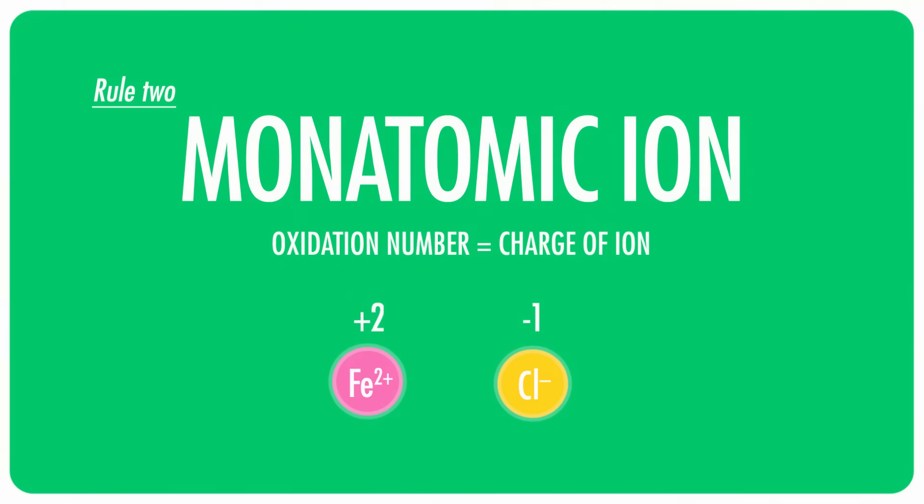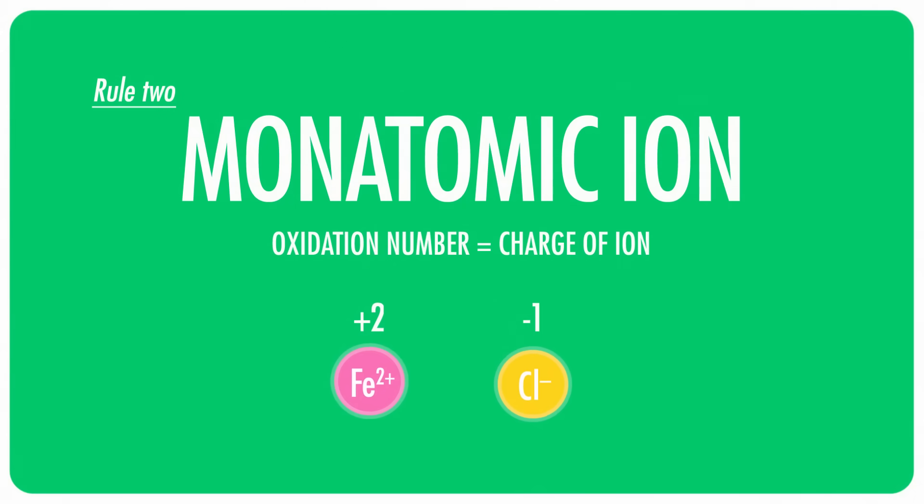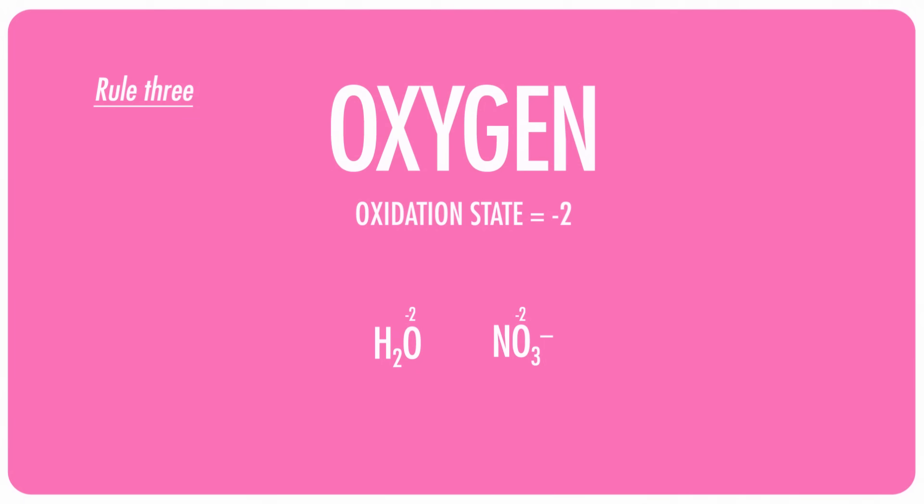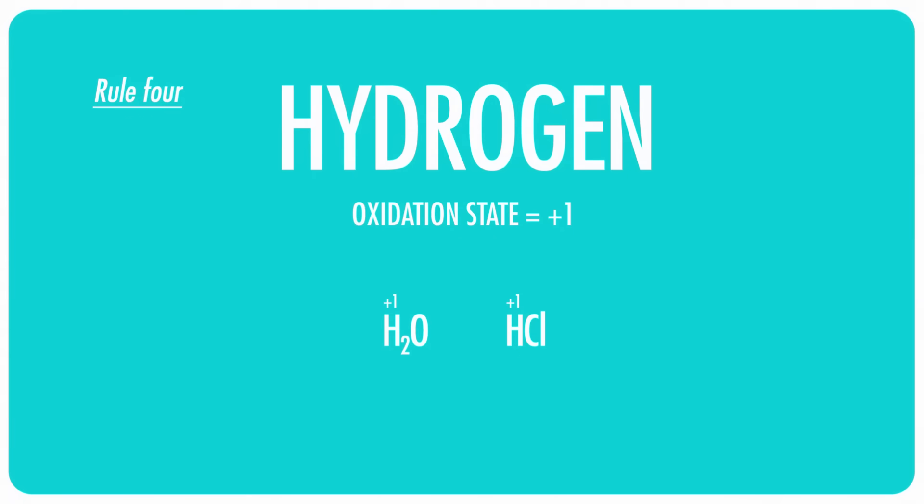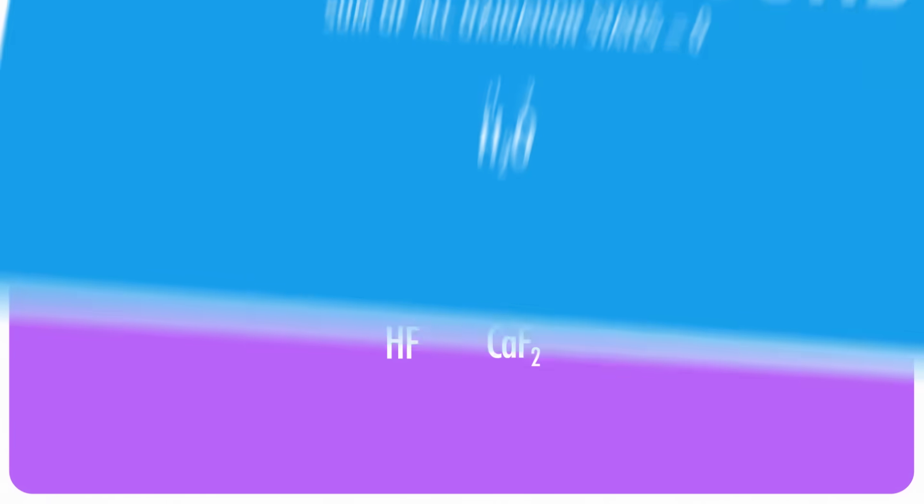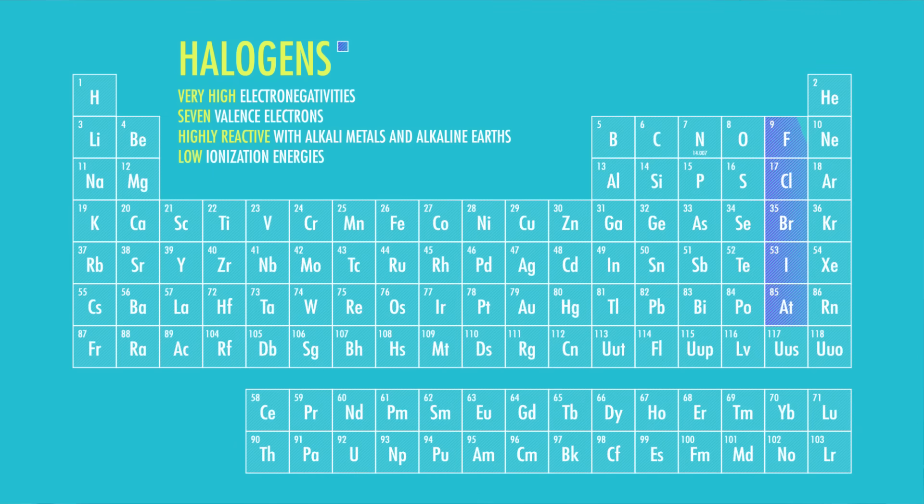Second, for a monatomic ion, basically a charged atom, it's simply the size or number of its charge. So the iron 2 in Fe2+ has an oxidation state of plus 2, while a chloride ion is minus 1. Third, oxygen, which is unsurprisingly all over redox chemistry, almost always has an oxidation of negative 2, unless it happens to be in a peroxide molecule like hydrogen peroxide. Fourth, hydrogen is plus 1, and fifth, fluorine is negative 1, as are all the other halogens most of the time. Pretty much, unless they're bonded to fluorine or oxygen, because fluorine and oxygen are so bad that they can make anybody's oxidation number positive, if you know what I mean.